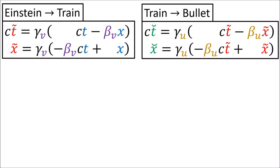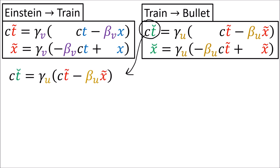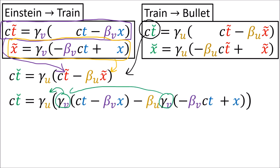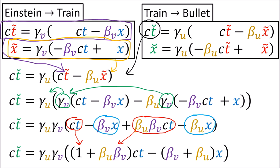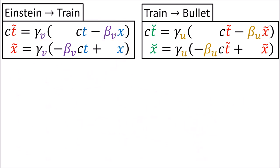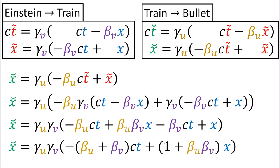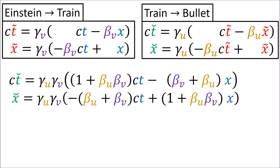We can combine these Lorentz transformations the same way as before. Starting with the ct-smile equation, we substitute in the equations for ct-tilde and x-tilde, factor out gamma-v to the front, and combine the terms containing ct and x. This gives us an equation converting from ct and x to ct-smile. We can do the same thing for the x-smile equation, giving us equations for converting Einstein's coordinates ct and x into the bullet's coordinates ct-smile and x-smile.